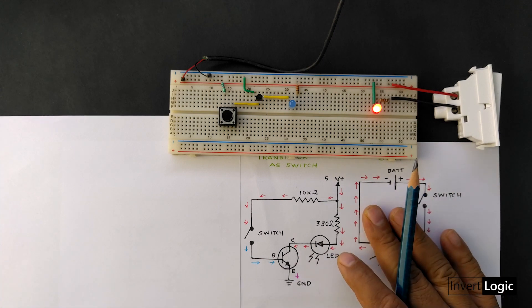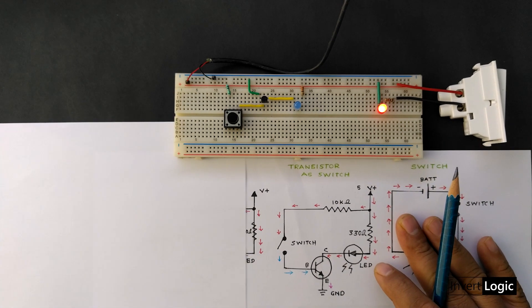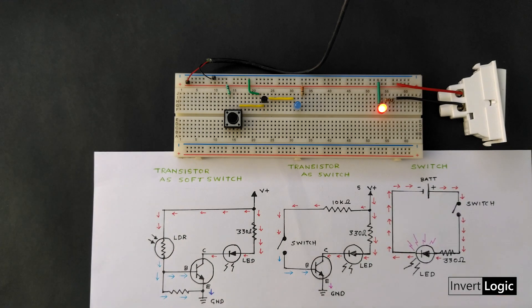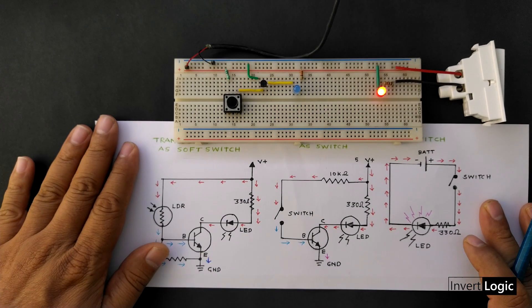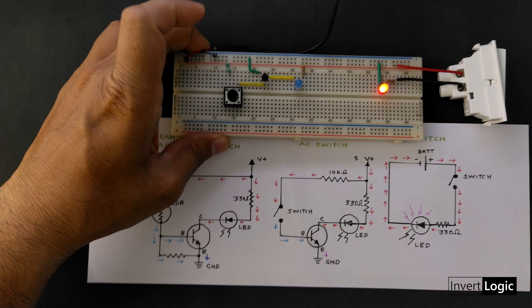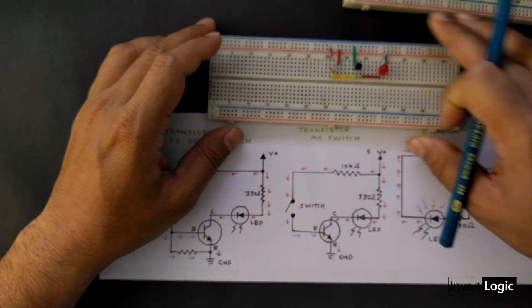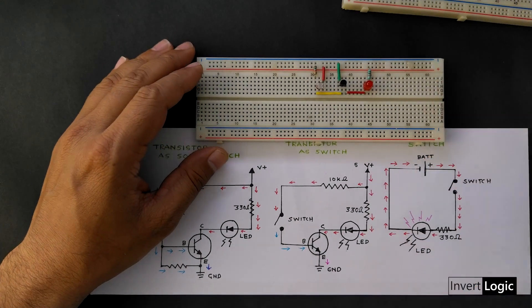Now let's see how we can do the same thing but using another component to generate the signal to turn on the transistor. So we have to remove that tactile switch and use some other components which can generate a signal for us.